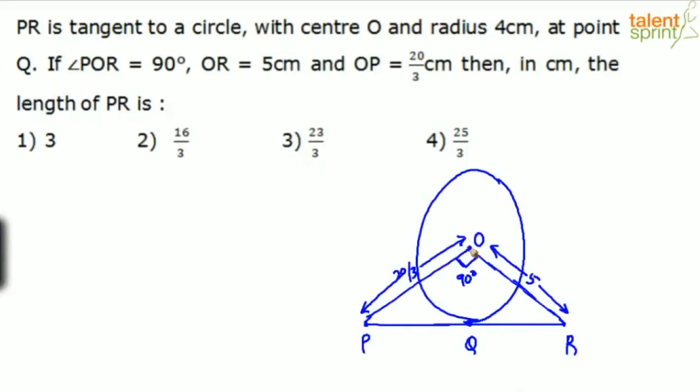O is the center of the circle and the radius is 4 cm. So let us drop this length here. This is 4 cm. Radius from O to the point Q is radius of the circle. And we also know that the angle made at the point of tangency is a right angle. So this will be 90 degrees. And this angle will also be 90 degrees.